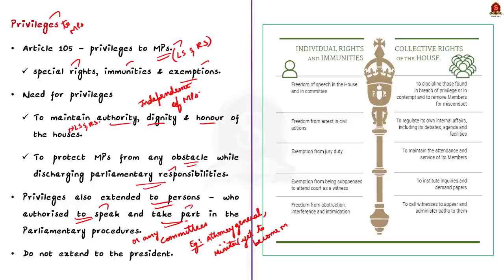Privileges can be classified into two broad categories: collective privileges, which are enjoyed collectively by each House of Parliament, and individual privileges, which are enjoyed individually by each member of Parliament.